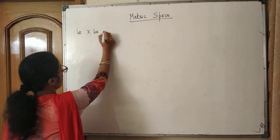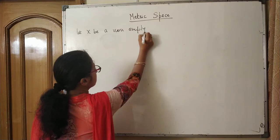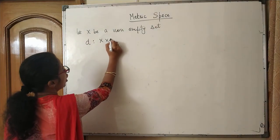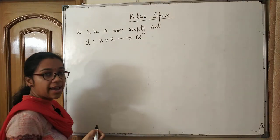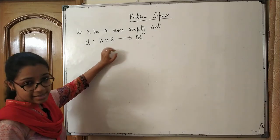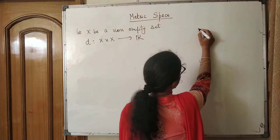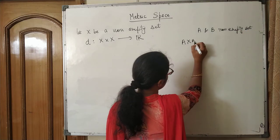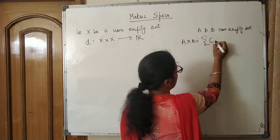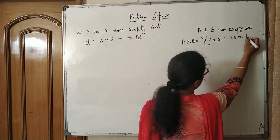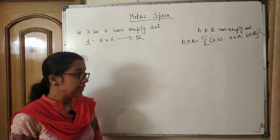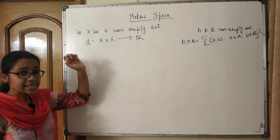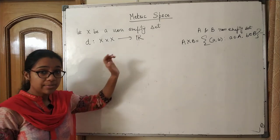Let X be a non-empty set. We have a map D from X cross X to the set of real numbers. X cross X is the Cartesian product of X with X. If A and B are two non-empty sets, then A cross B is the set of ordered tuples (a, b) where a comes from A and b comes from B. Here we have X cross X, which is the set of ordered tuples (x, y) where both x and y come from X.